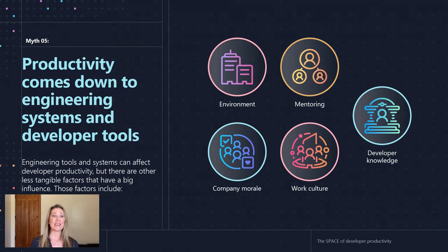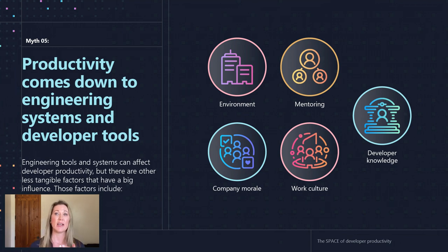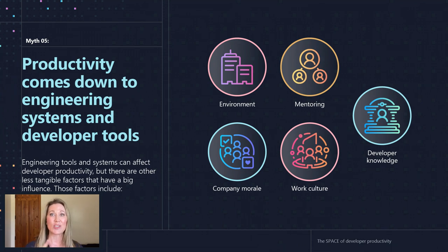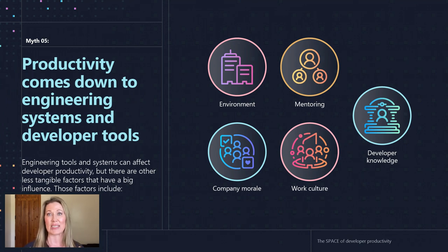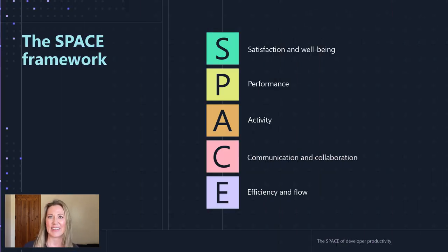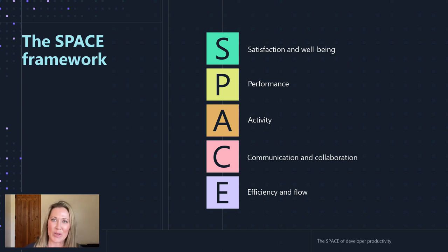Myth five is that productivity is just about engineering systems and developer tools. I agree this is super important — how well our systems can support us and remove friction and help give us a superior developer experience is super important. But it's not the only thing. Our work environment, our context, how well we can communicate and collaborate — these are just as important, if not more. When we think about removing friction and barriers, communication also helps us develop and deliver software in superior ways. So the tooling is important, so is the process, so is the culture. This is why we developed the SPACE framework — to really capture the different dimensions of productivity and help bust these common developer myths.